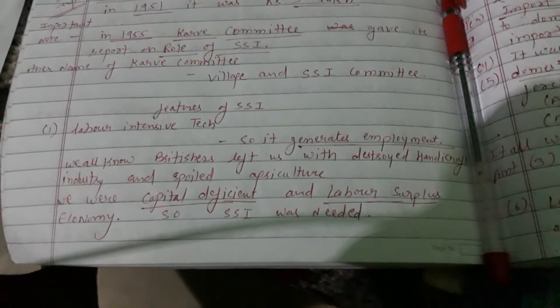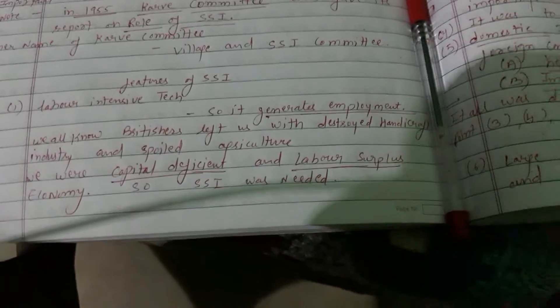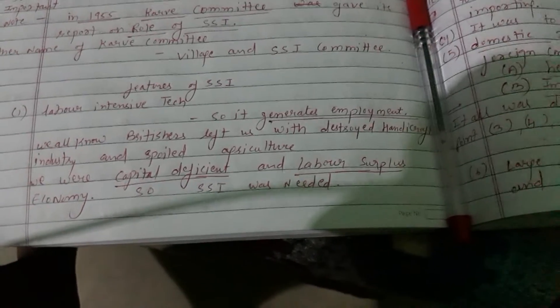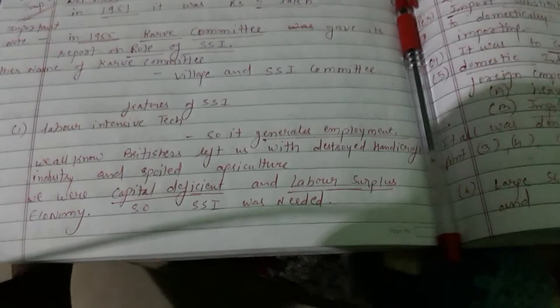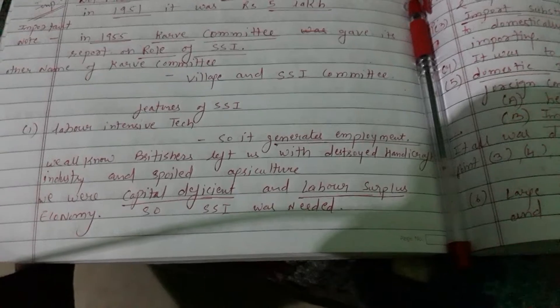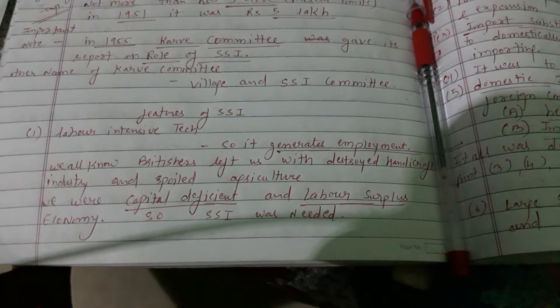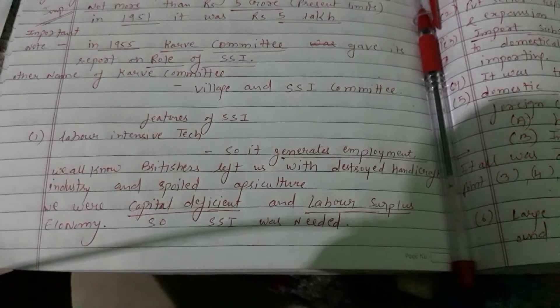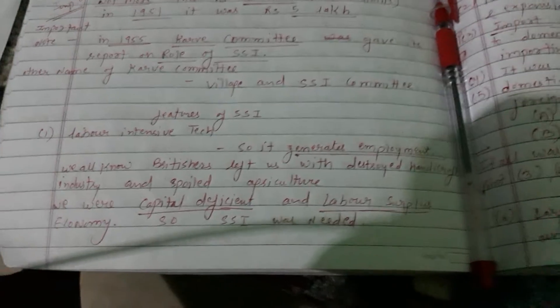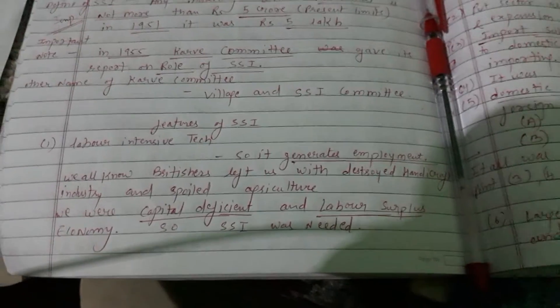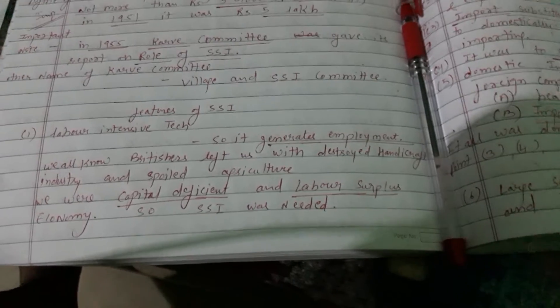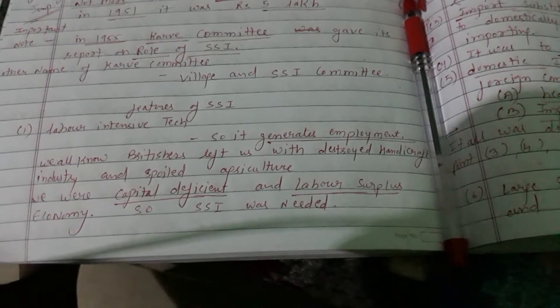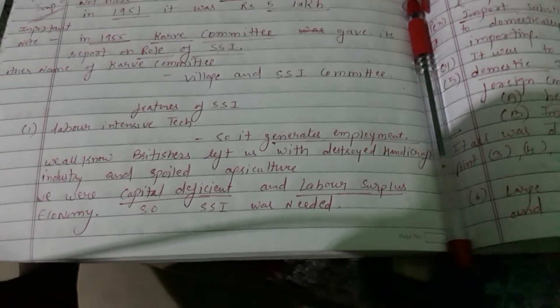Now if we go to the features of SSI — as you are reading or watching this topic now, you will find many things that you have already discussed in class 11, so you won't feel any trouble. The very first feature of small scale industries is that they work on labor-intensive technology. The clear reason behind this is that SSI focuses on using more labor than capital.